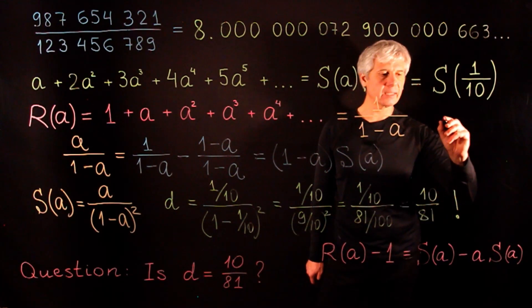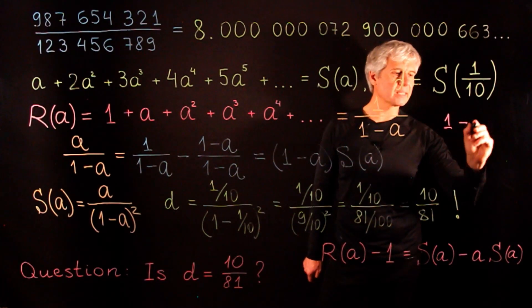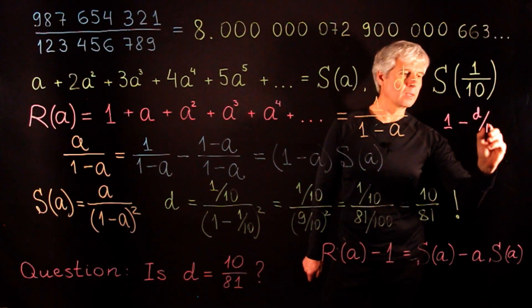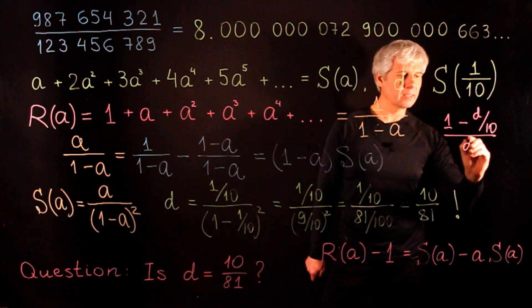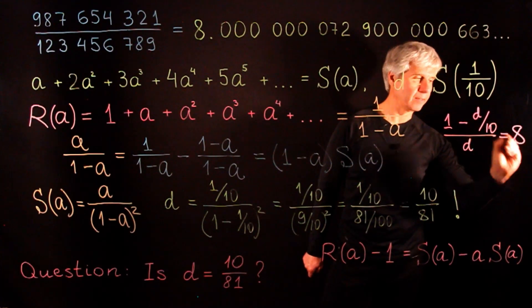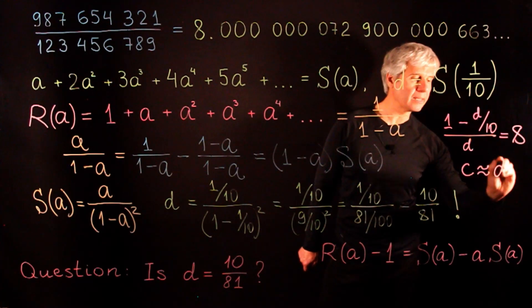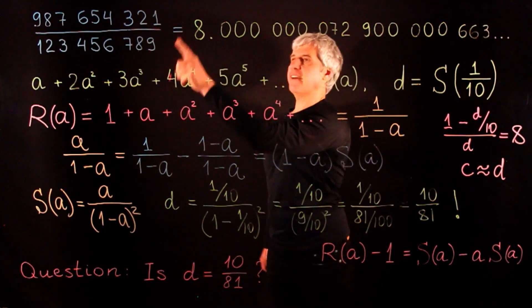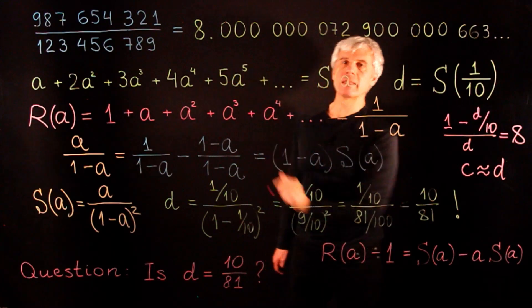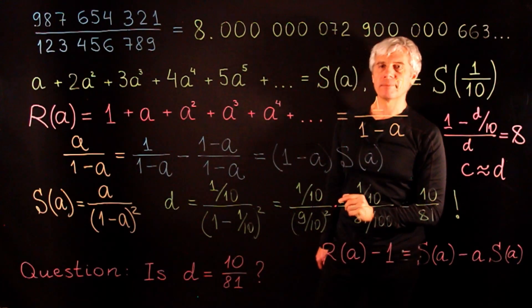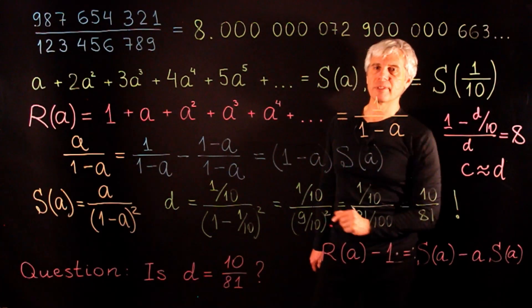This tells us that 1 minus d over 10 over d has value exactly 8. And since c is extremely close to d, then this value is not 8 but very close to it. Mystery solved!